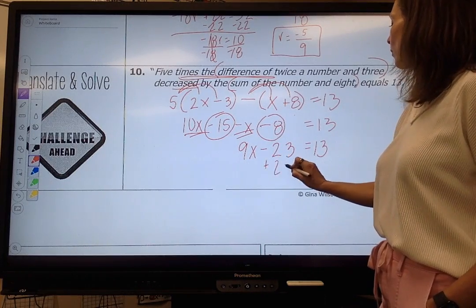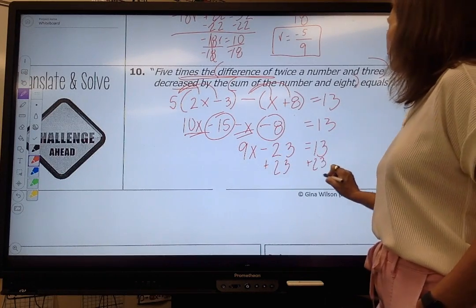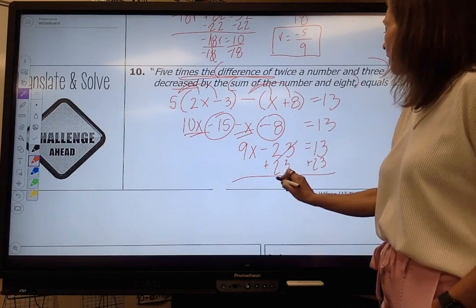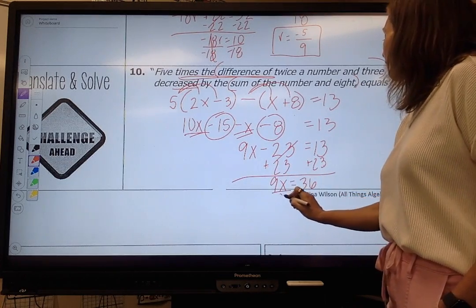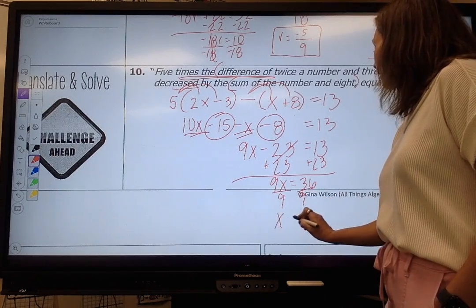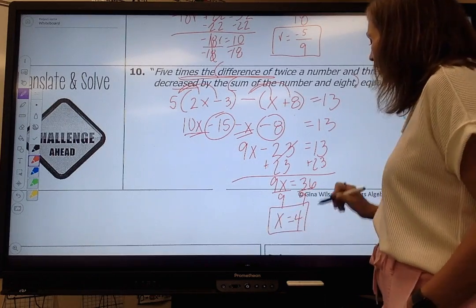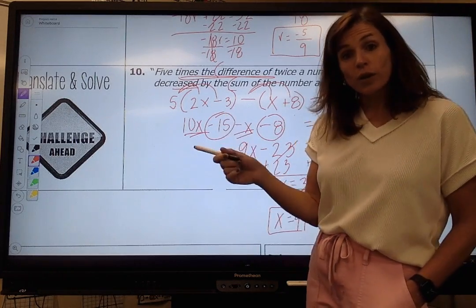I add 23 to both sides, additive inverse, equality says I do it on both sides, and I get 9x equals 36. Divide both sides by 9, and I get x equals 4. And there's my answer. If you're struggling, come see me.